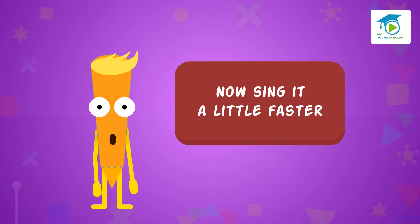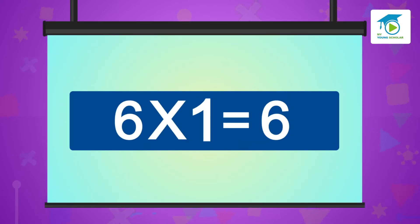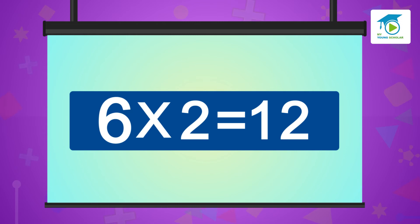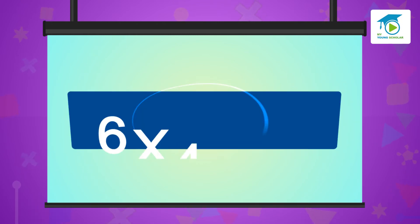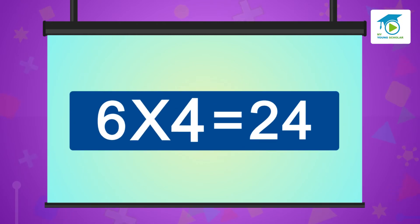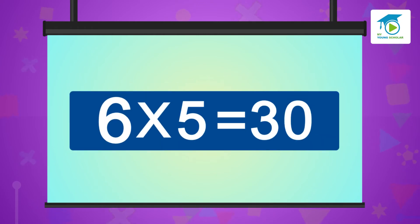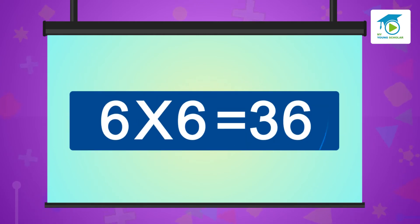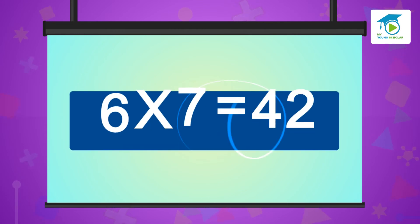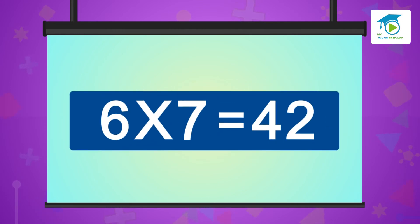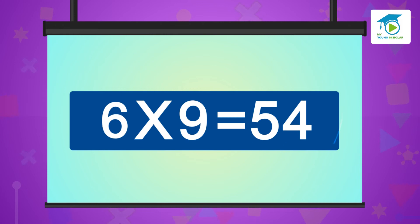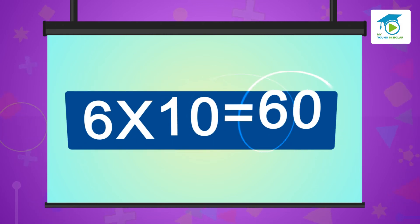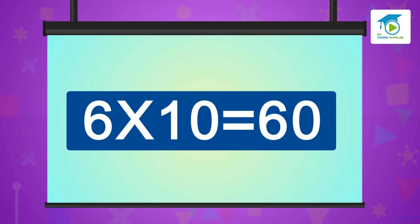Now let's sing a little faster. Six ones are six, six twos are twelve, six threes are eighteen, six fours are twenty-four, six fives are thirty, six sixes are thirty-six, six sevens are forty-two, six eights are forty-eight, six nines are fifty-four, six tens are sixty.